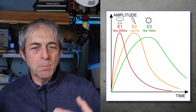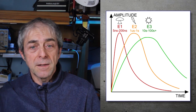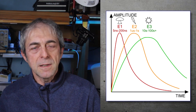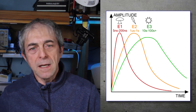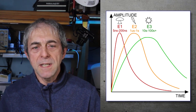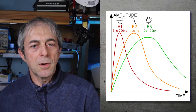EMPs are divided into three classes: E1, E2, and E3. This depends on the speed it takes to reach the peak of the pulse. E1 pulses are extremely fast, brief pulses that take 5 nanoseconds to reach the peak and last about 200 nanoseconds. E2 pulses take 1 microsecond and last maybe 1 second, and E3 pulses are very slow, taking 10 seconds to reach the peak and lasting hundreds of seconds.